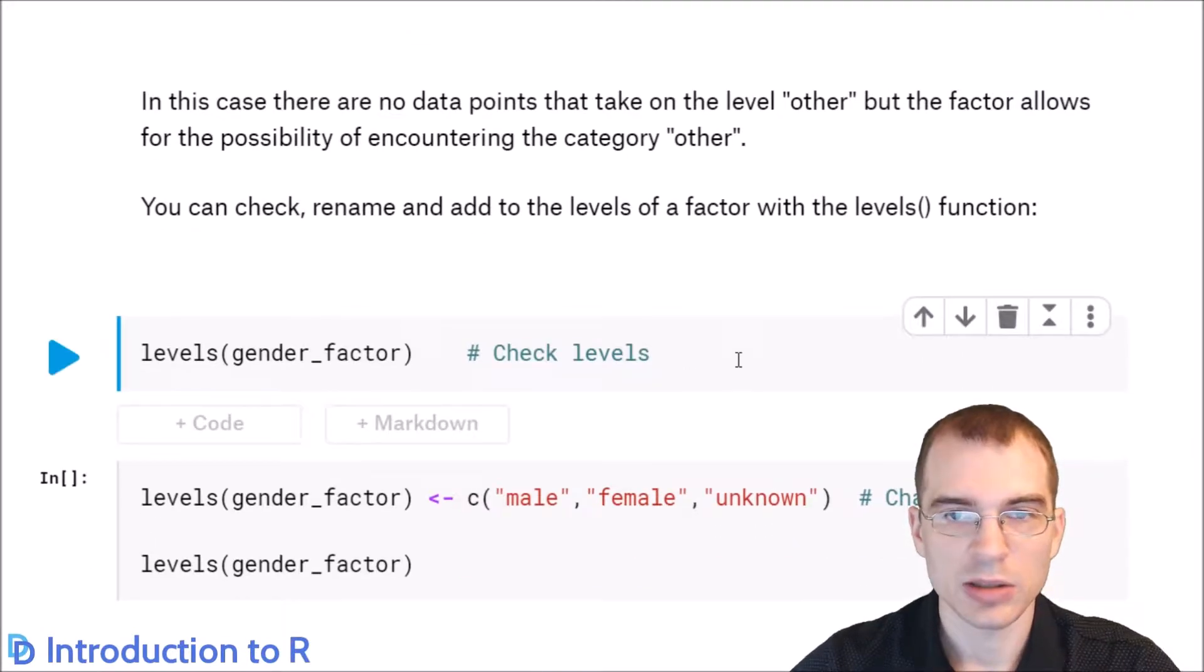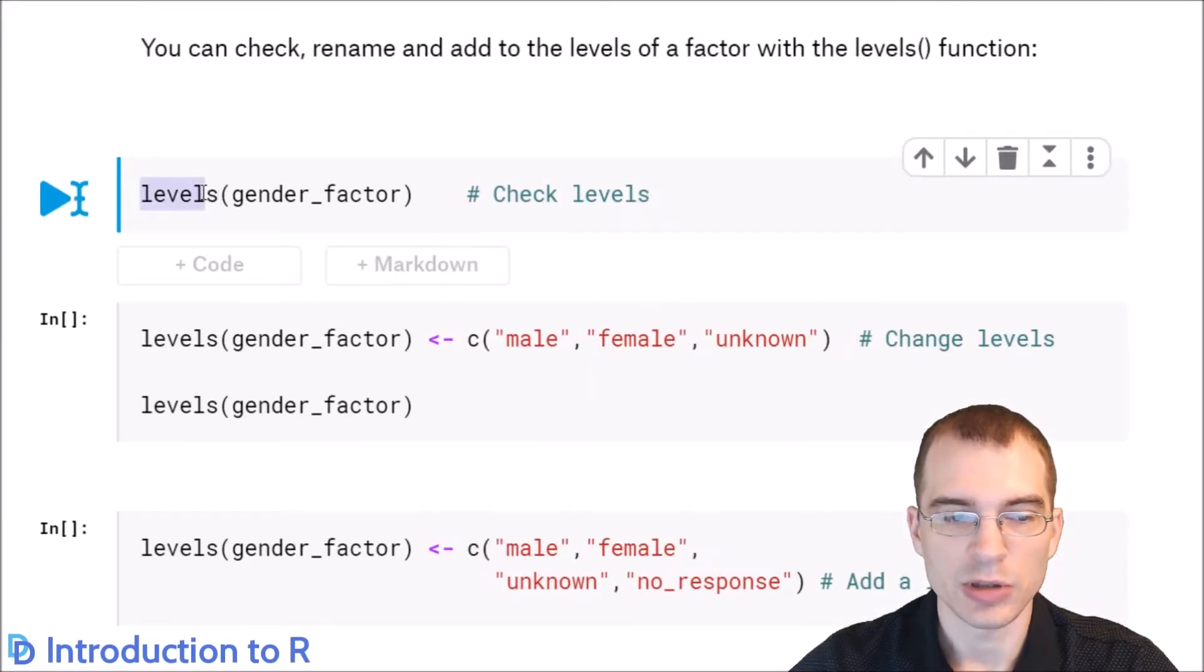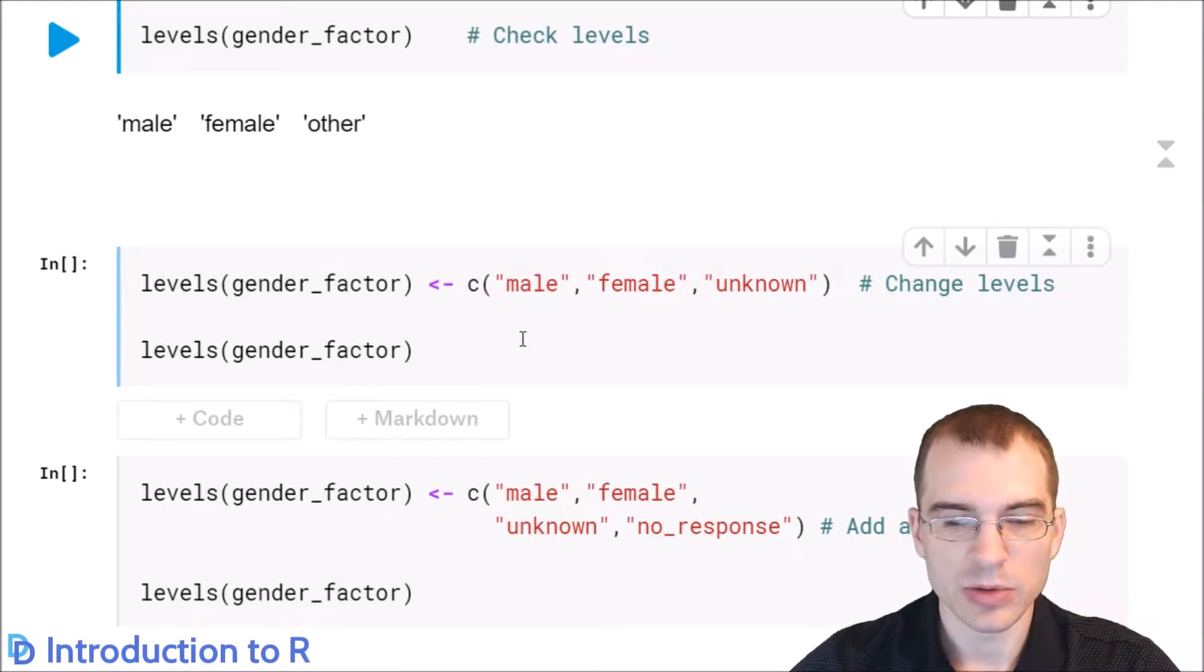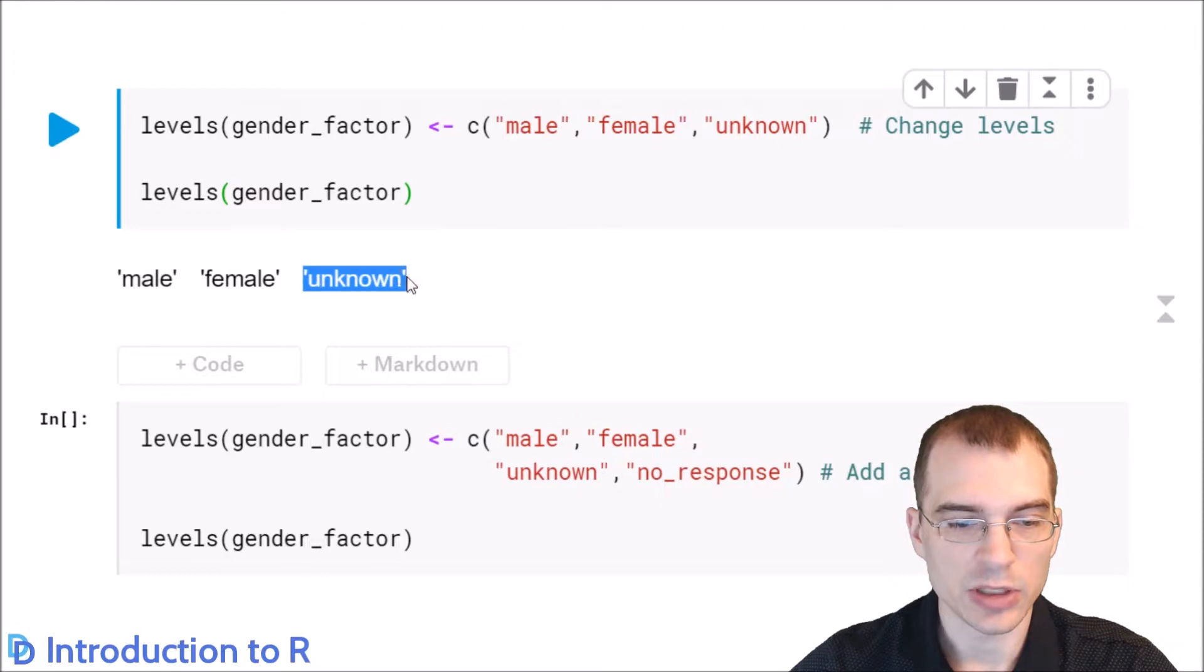Now to check the different categorical levels of a factor, you use the levels function. So here we're using levels, and we're passing in the factor we just made to check the levels that are available, male, female, and other. Now you can also change the levels after the factor has been created. To do that, you use the levels function, but then afterwards you use the assignment operator to assign the new levels. So here we're using levels, and we're assigning new factor names, male, female. Those are both the same, but this last one, unknown, is different. So we're changing other to unknown, essentially, and then we're going to look at it again. You can see that that level has been changed successfully.